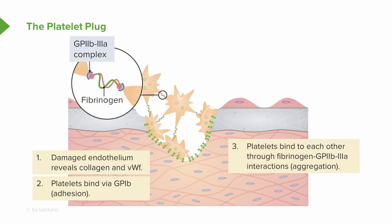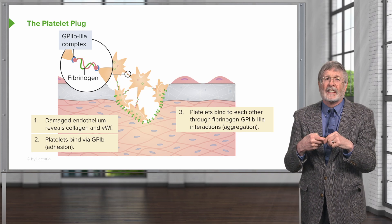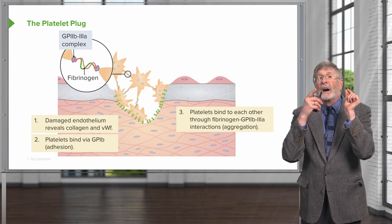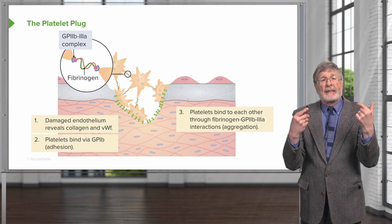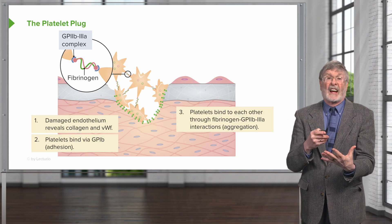When the platelets bind to that surface, they undergo a shape change and get activated themselves so that they can now interact platelet to platelet through another surface molecule, the glycoprotein 2b3a complex, shown in the upper left-hand side. That GP2b3a complex binds to fibrinogen — not the polymerized fibrin, but fibrinogen — and that will bridge between platelets so we can build that definitive secondary hemostatic plug.